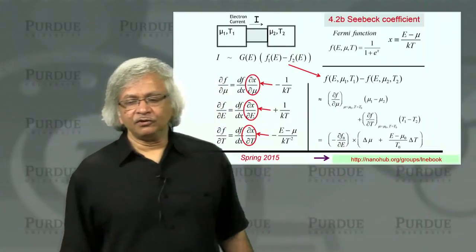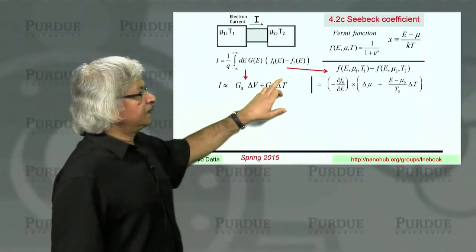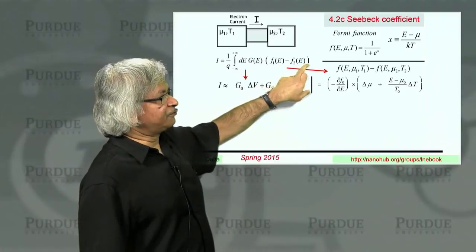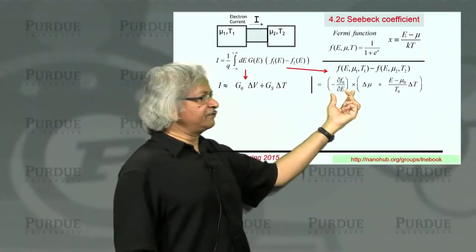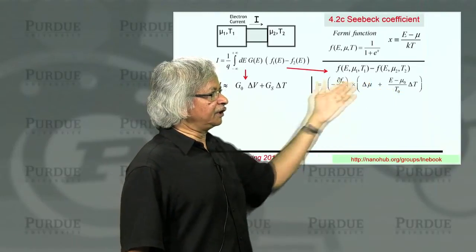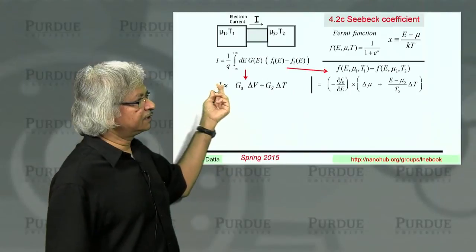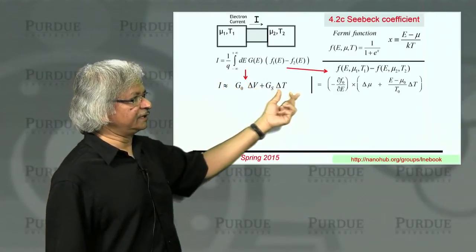But what you can now show is, if you compare these two, that this one is like E minus mu over T times that one. And that's the factor we have here. So if you use this, what you can do is this F1 minus F2 then, you're writing as dF dE times this.